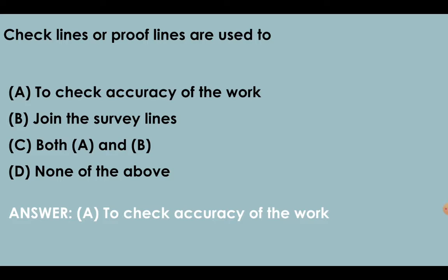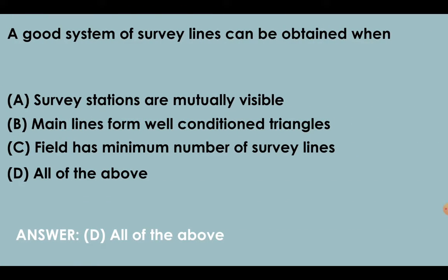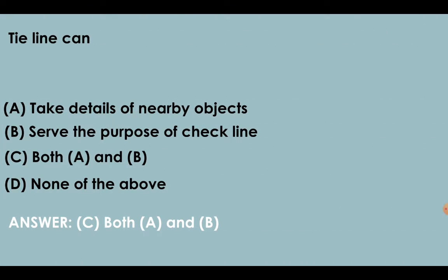Check lines or proof lines are used to check accuracy of the work. A good system of survey lines can be obtained when survey stations are mutually visible, main lines form well-conditioned triangles, and field has minimum number of survey lines. Tie line can take details of nearby objects as well as serve the purpose of check line.